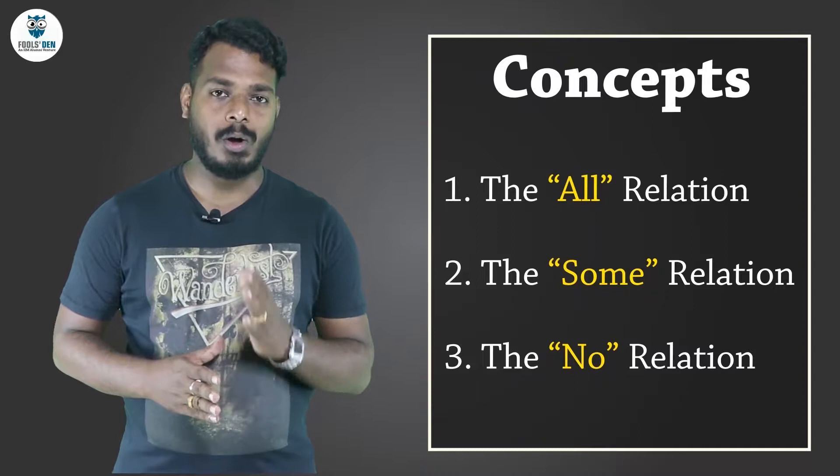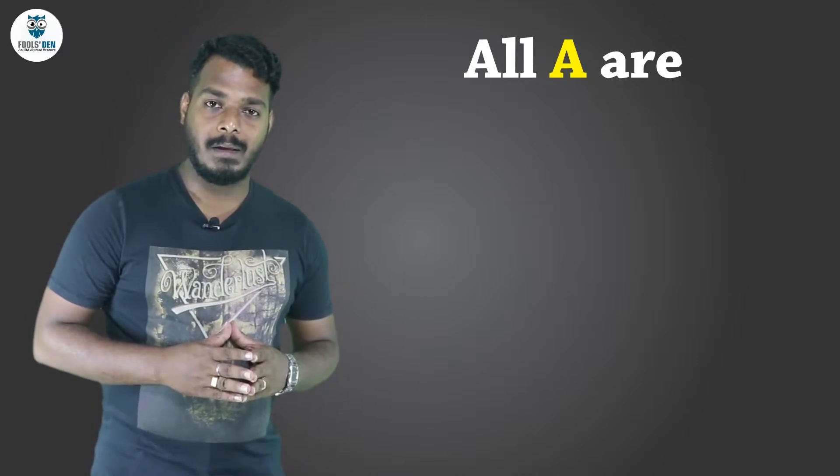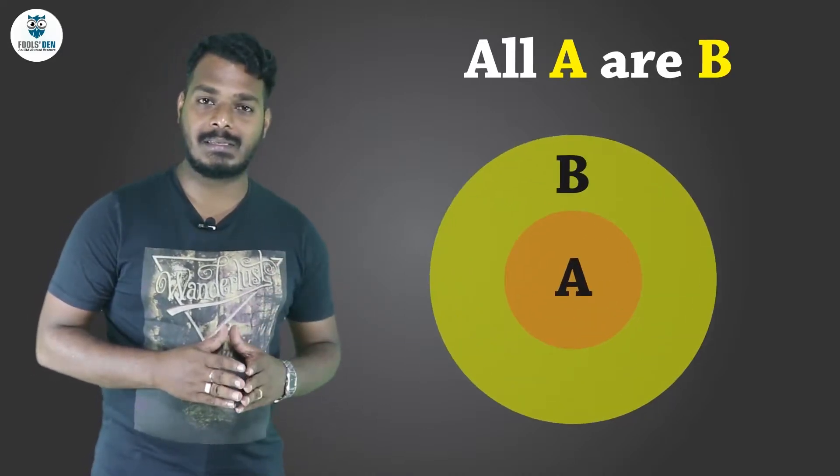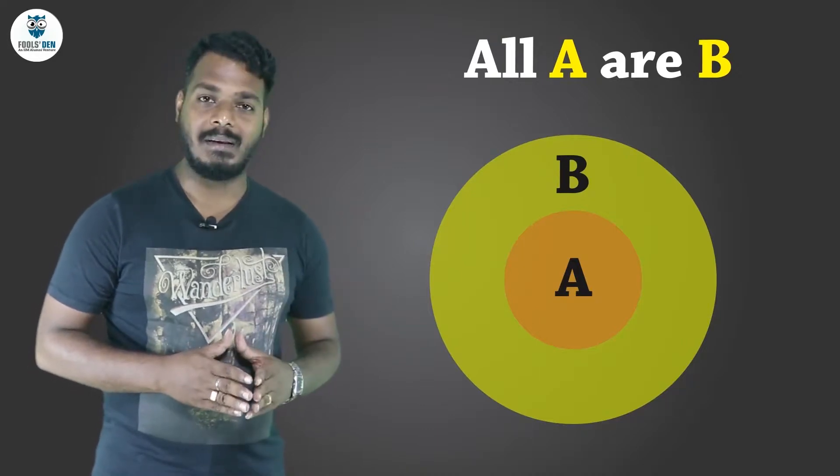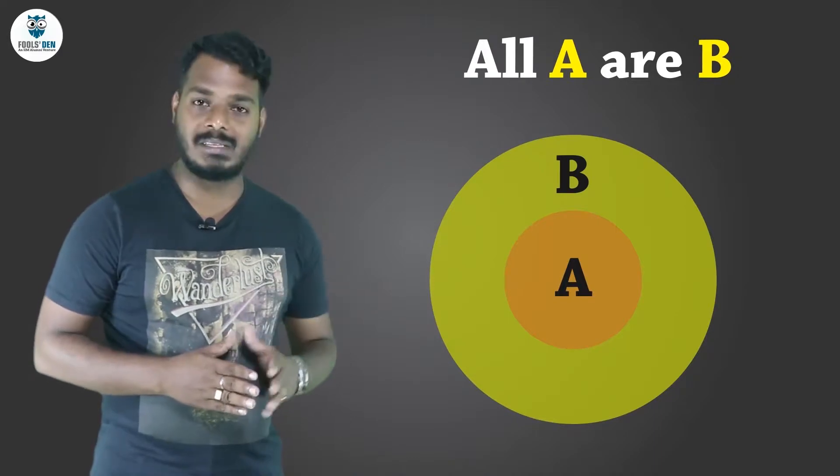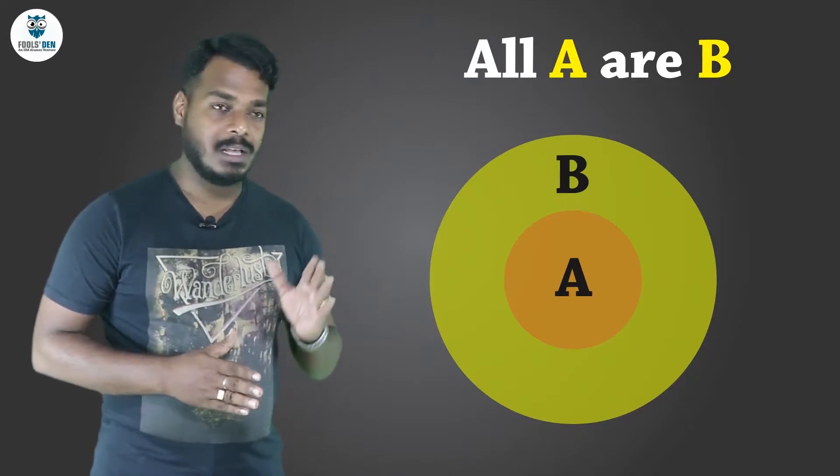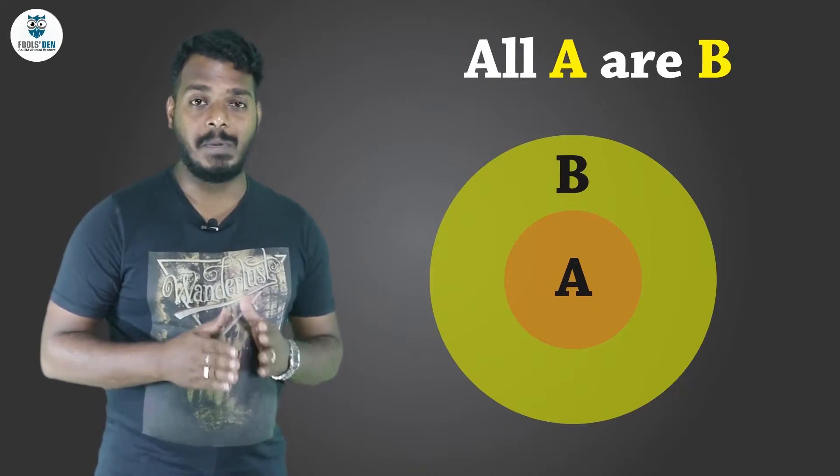So let's start with the first one, that is the all relation. Suppose I say that all A are B, that will be represented something like this. Here the set that represents A would come inside the set that represents B, because in this diagram you can see that the complete area under set A is a part of the set B.